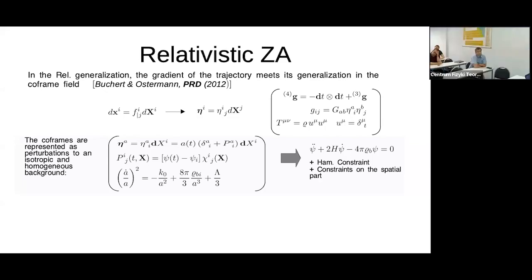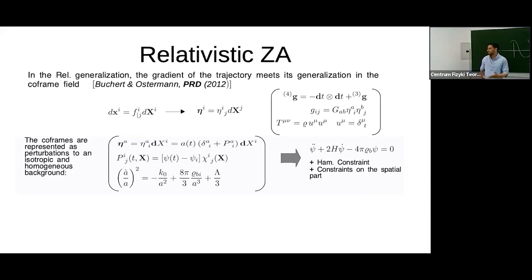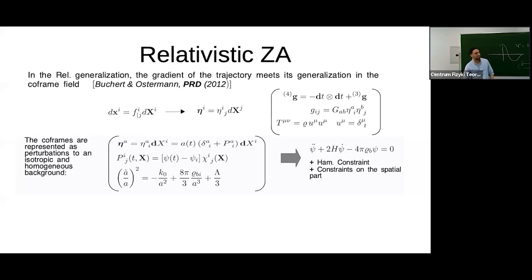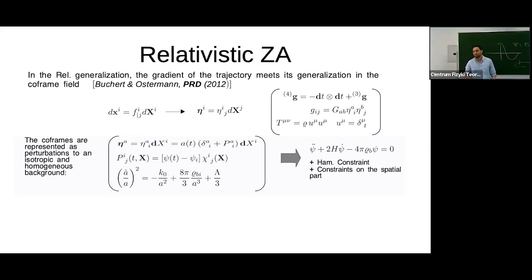When we linearize, we get evolution equations and constraints. The constraints arise because Einstein's equations have more field equations than Newton — ten versus one Poisson equation, reducible to about six using coordinate freedom. The evolution equations in the relativistic Zel'dovich approximation are linear, but the overall approach is nonlinear because the deformation field enters the density non-linearly through the Jacobian determinant.